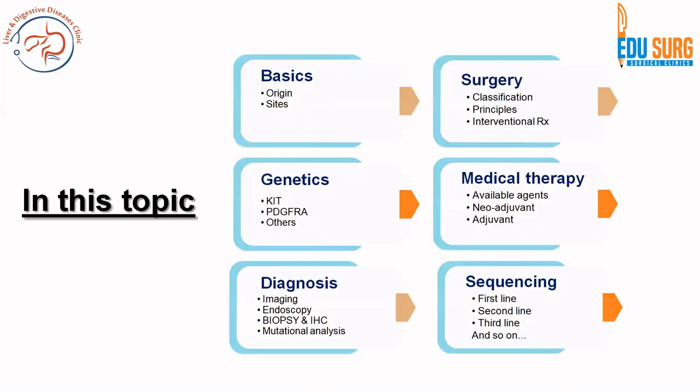In this part we have covered the basics of GIST and in detail the genetics — KIT, PDGFRA, and other mutations — as well as Carney triad and Carney-Stratakis syndrome. In the upcoming parts we will cover diagnosis and surgery, and then medical therapy and the practical sequencing of these treatments. Thank you.